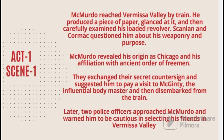In Scene 1, McMurdo reached Vermissa Valley by train. He produced a piece of paper, glanced at it and then carefully examined his loaded revolver. Scanlon and Cormac questioned him about his weaponry and purpose. McMurdo revealed his origin as Chicago and his affiliation with the ancient order of free men. They exchanged their secret countersign and suggested him to pay a visit to McGinty, the influential bodymaster, and then disembarked from the train.